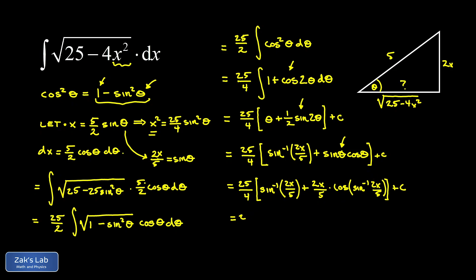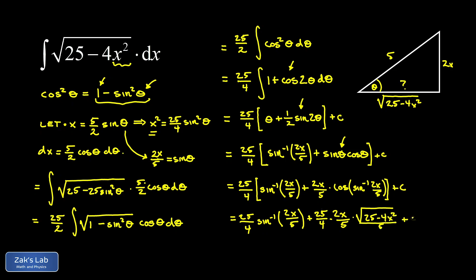Distributing the 25 fourths, we get 25 fourths times inverse sine of 2x over 5, plus 25 fourths times 2x over 5 times the cosine of this angle — which is adjacent over hypotenuse, giving square root of 25 minus 4x squared over 5, plus c. In the second term, the 25 cancels with the two factors of 5, and a factor of 2 cancels, leaving a 2 in the denominator. The final answer is 25 fourths times inverse sine of 2x over 5 plus 1 half times x times the square root of 25 minus 4x squared, plus c.